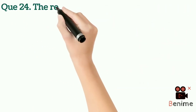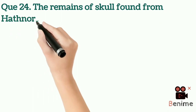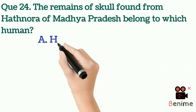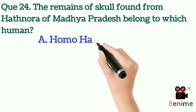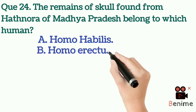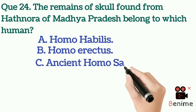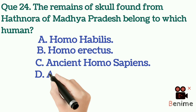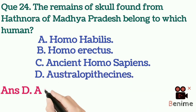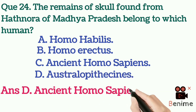Question 24: The remains of skull found from Hathnora of Madhya Pradesh belong to which human? A. Homo habilis. B. Homo erectus. C. Ancient Homo sapiens. D. Australopithecines. Answer: Ancient Homo sapiens.